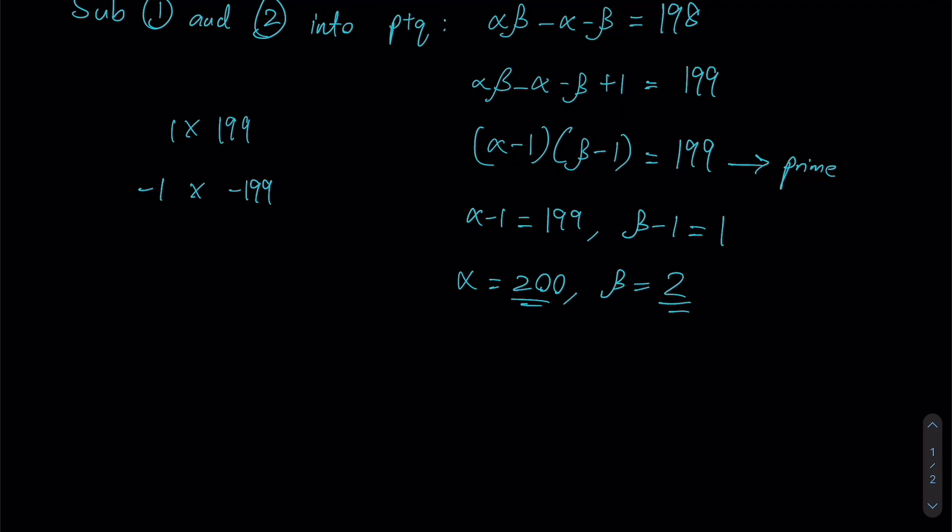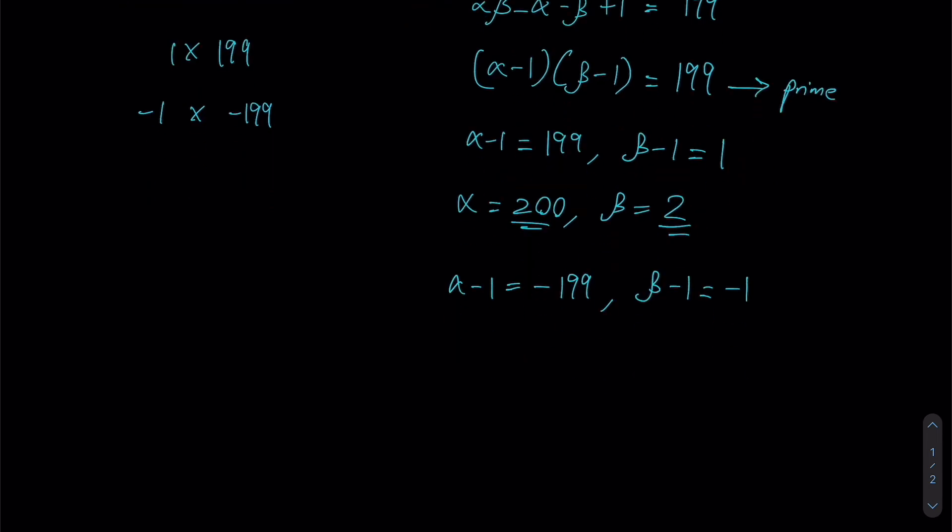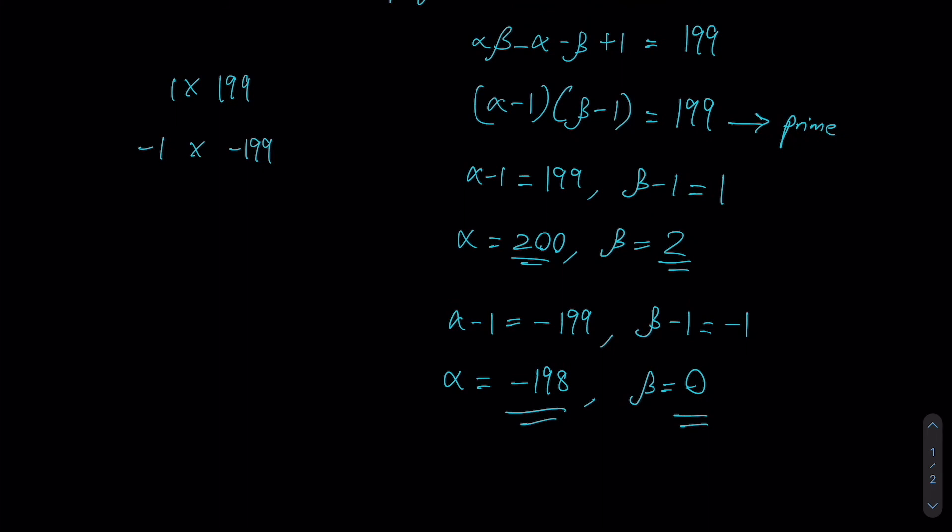We also have to consider the negative counterpart, which means that α - 1 could be -199 and β - 1 could be -1. Adding 1 to both sides, α will therefore now be -198 while β will actually just be 0. Since both of these are integers as well, we would have a total of 4 such integer solutions.